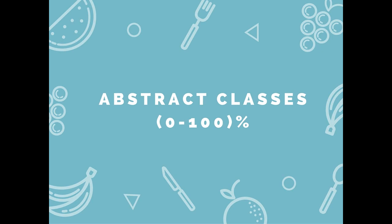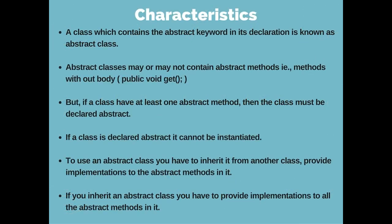Abstract classes provide 0 to 100% abstraction. All abstract classes use the keyword abstract. Abstract classes can contain non-abstract methods as well as abstract methods, but if a normal class has at least one abstract method, it must be declared as abstract. Abstract classes cannot be instantiated, which means that you can't create an object for an abstract class. To use an abstract class, you have to inherit it from another class using the extends keyword, and you have to provide implementation to the abstract methods you declared in the abstract class.